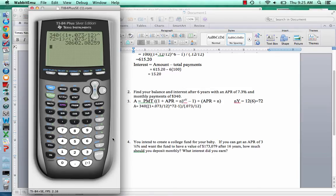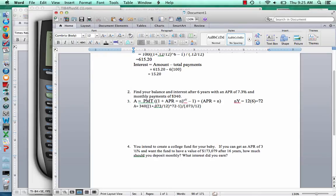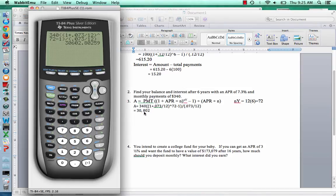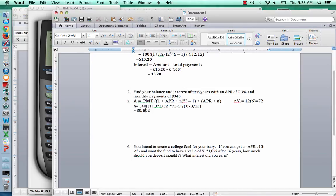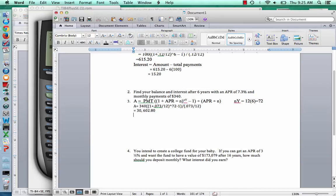And this will tell us how much our 340 is going to grow to. 30,602, and 80 cents to the nearest cent. So, equals 30,602 and 80 cents to the nearest cent.